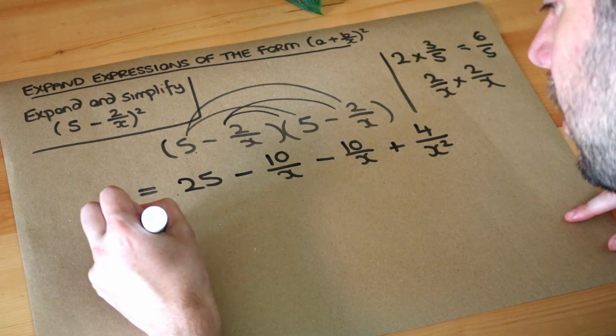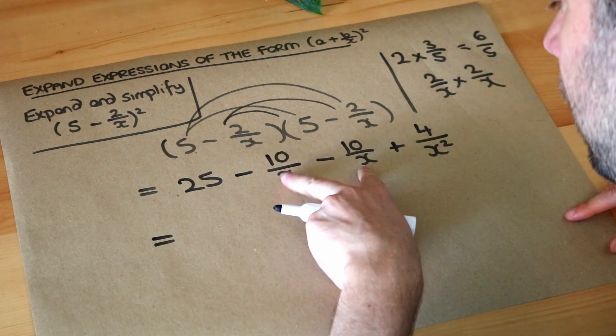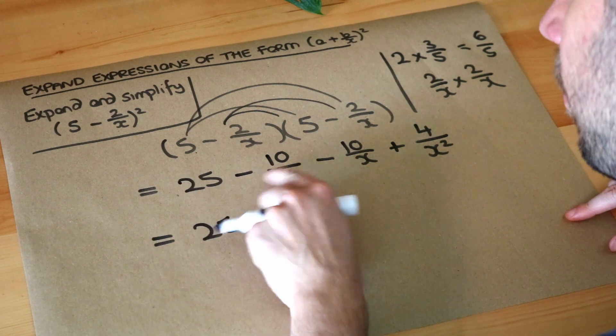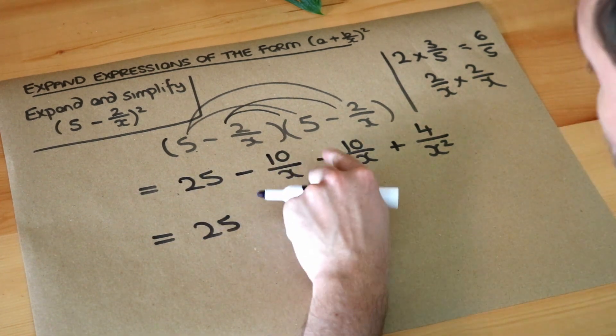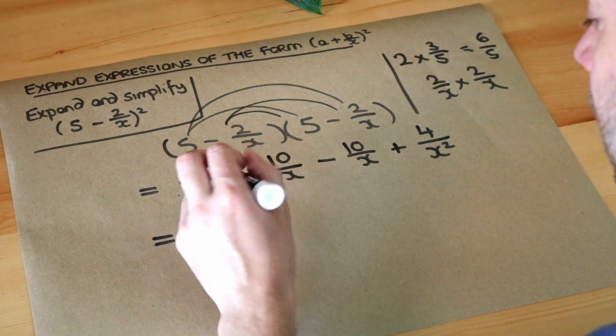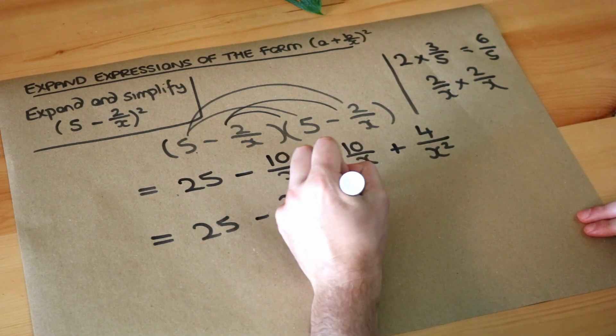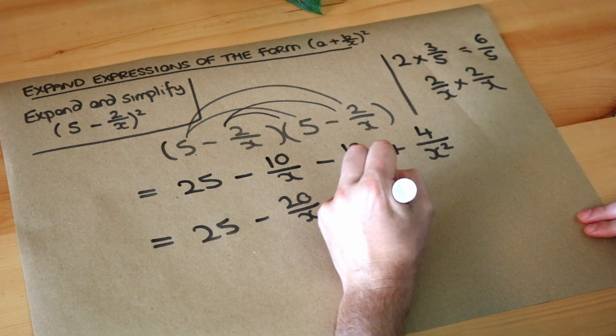Now we can do some collecting of like terms because these two fractions are both over x. So if we have minus 10 over x minus another 10 over x, then we have minus 20 over x, and we've still got that plus 4 over x squared term.